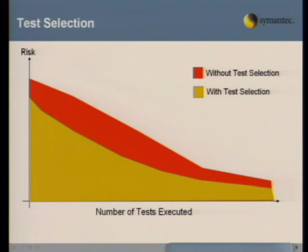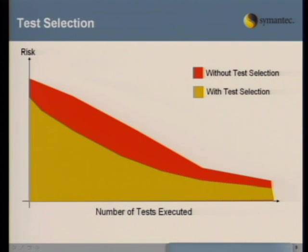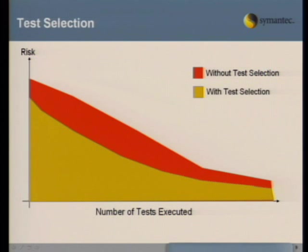This is a non-scientific graph meant to visualize an idea: your risk of releasing a regression bug back into the field is going to be much lower if you can execute every test, but that's not realistic. We believe that if you have a better method of test selection, you can reduce your risk of releasing regression defects. If you can select the regression tests that are more likely to fail, those failures won't be seen in the field.